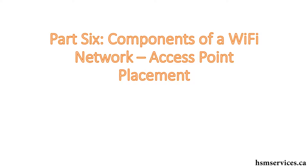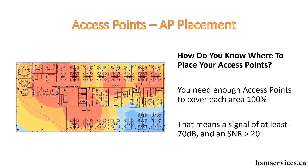In part 6 we're still talking about access points. We're going to talk about where to place your access points in a building. You need enough access points to give each area coverage. By coverage I mean that in any area in your building that requires coverage, you have a signal strength of at least negative 70 decibels and a signal to noise ratio that's greater than 20.